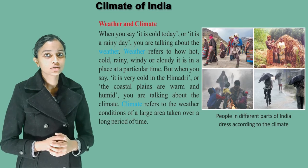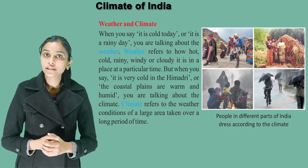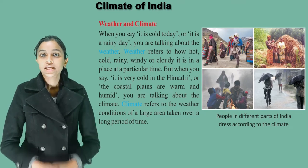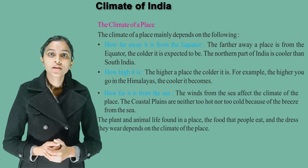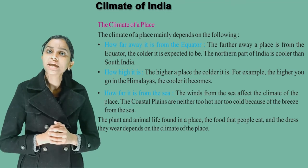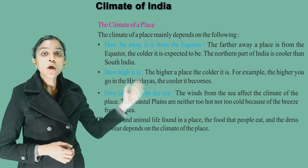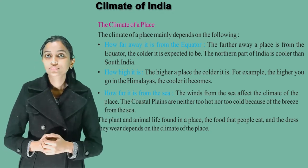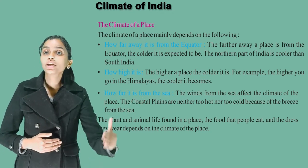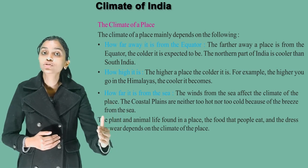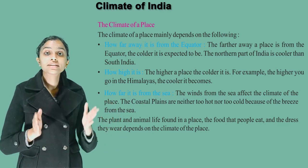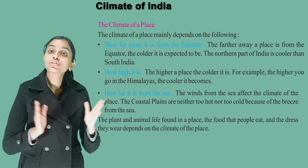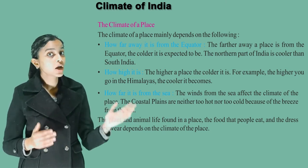Climate refers to the weather conditions of a large area taken over a long period of time. The climate of a place mainly depends on the following: how far away it is from the equator. The farther away a place is from the equator, the colder it is expected to be. The northern part of India is cooler than south India.